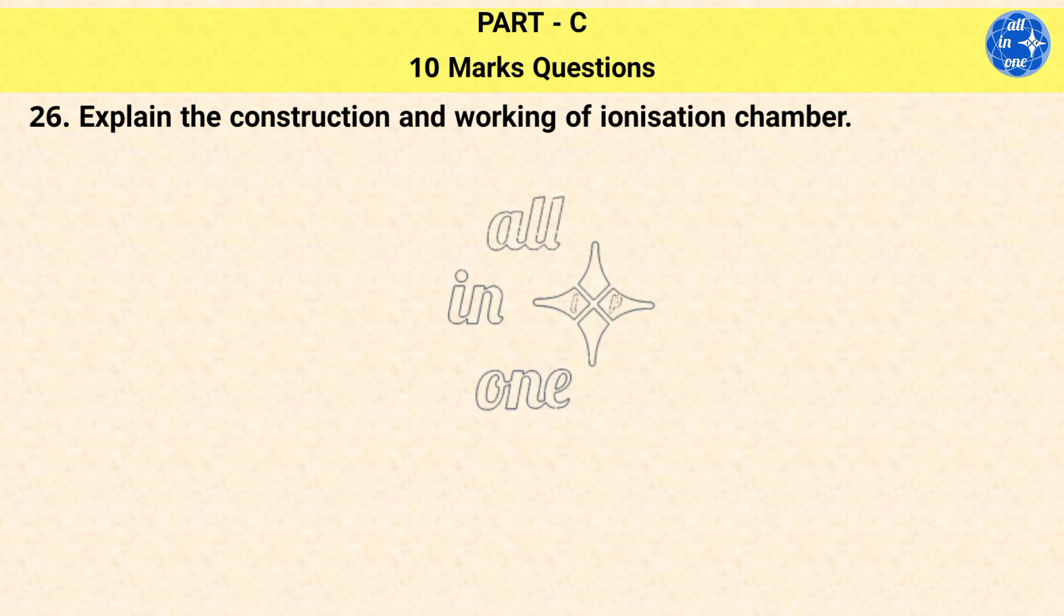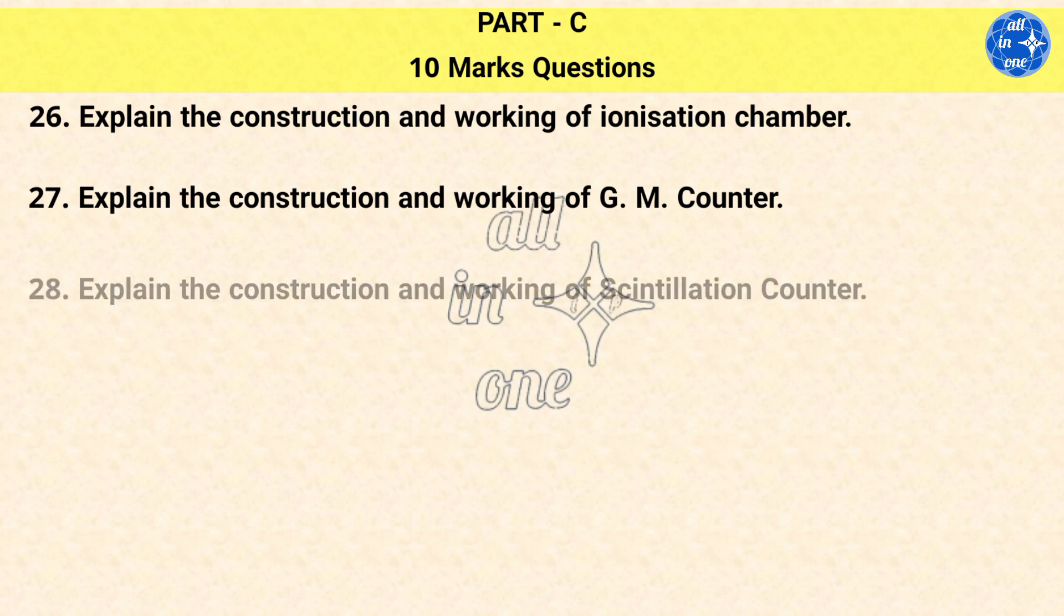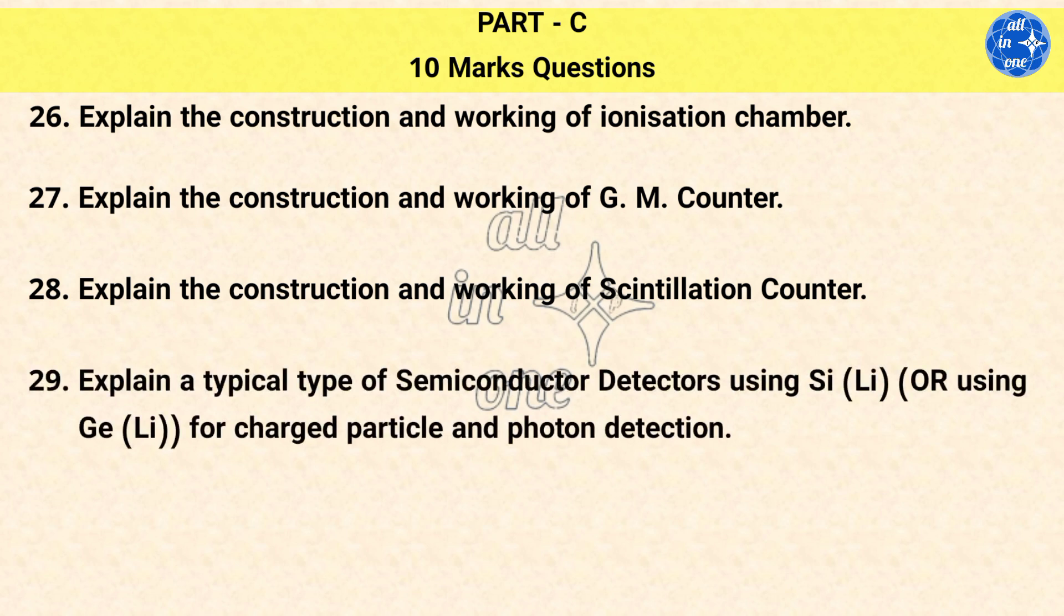Question 26: Explain the construction and working of ionization chamber. Question 27: Explain the construction and working of GM counter. Question 28: Explain the construction and working of scintillation counter. Question 29: Explain a typical type of semiconductor detectors using Si-Li or using Ge-Li for charged particle and photon detection. Question 30: Explain the construction and working of cyclotron.